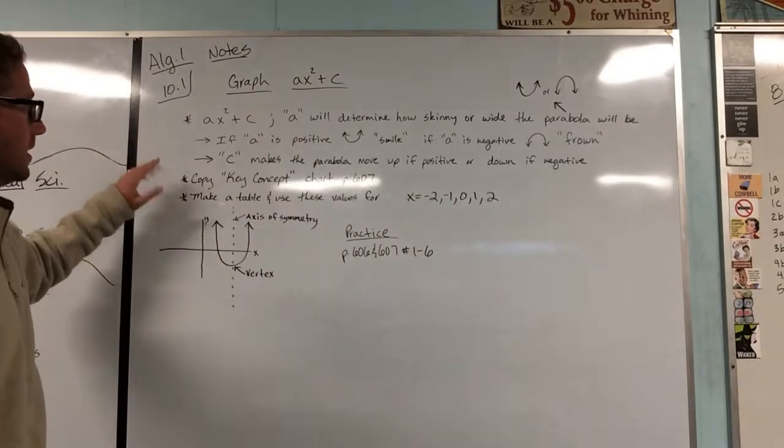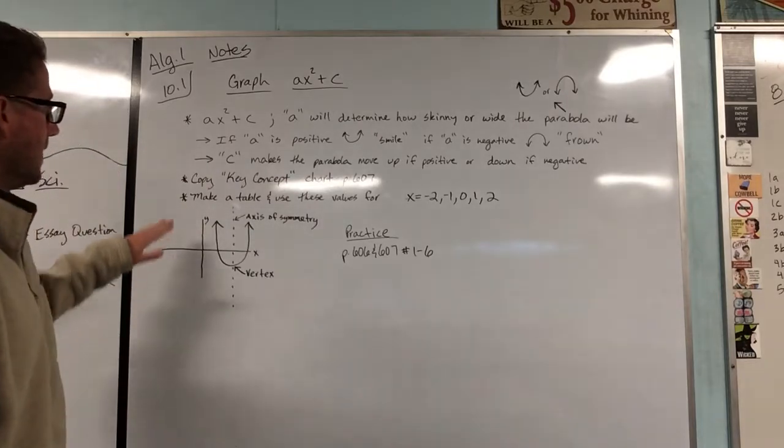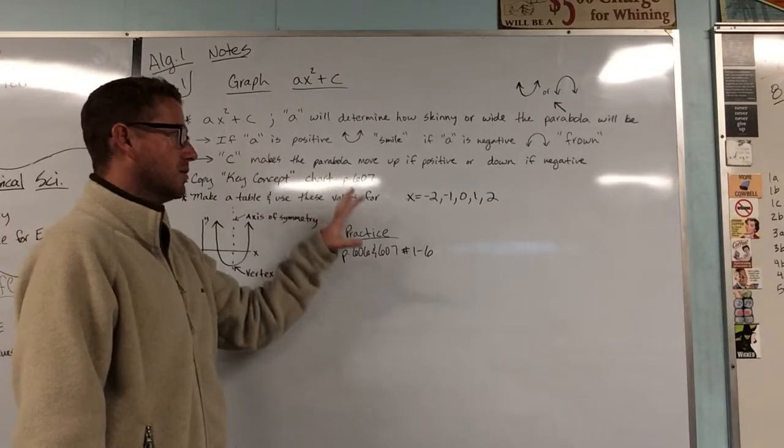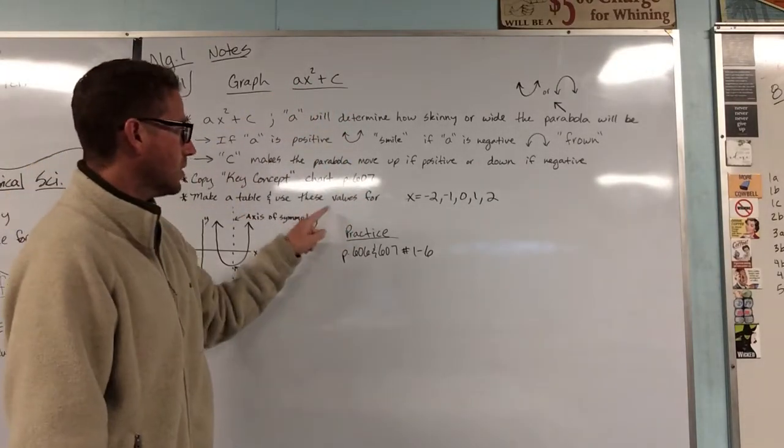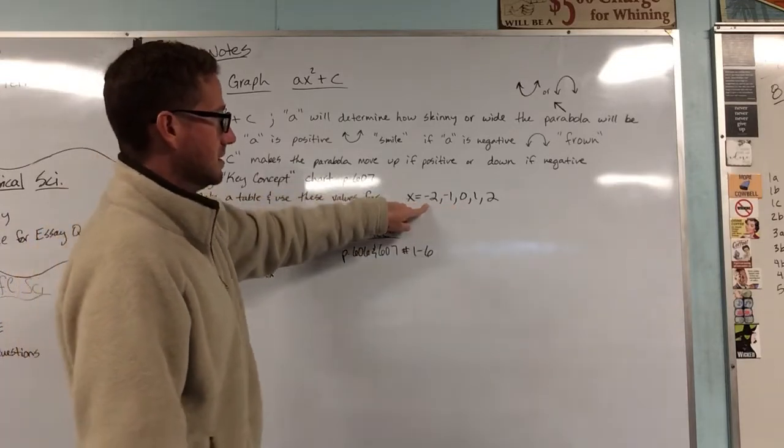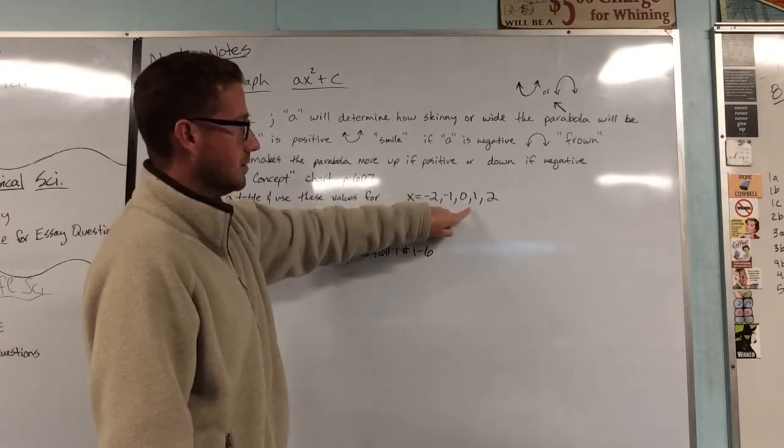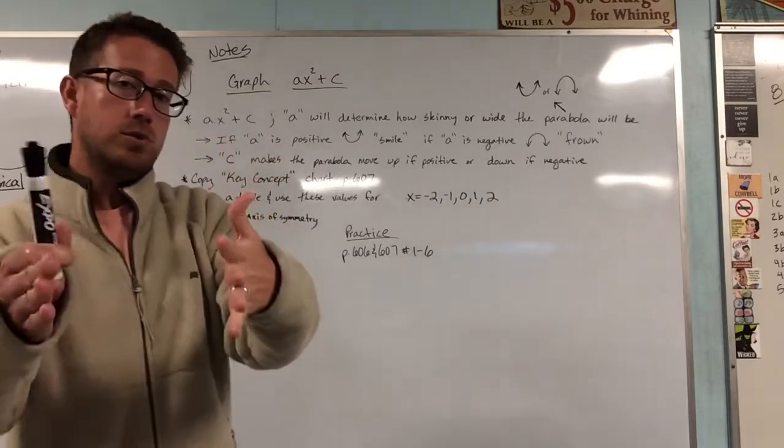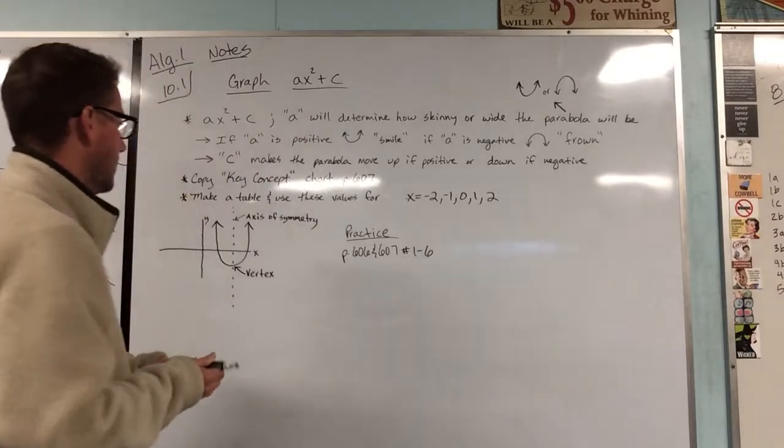All right, so there's a key concept chart, page 607, I'm going to want you guys to copy down, and then every time we make a graph using ax squared plus c, we're going to use these same values. All right, these values right here would be x is negative 2, x is negative 1, 0, positive 1, and positive 2. So you would be inputting these values in for x for every single problem.